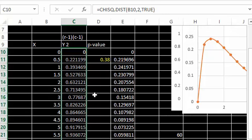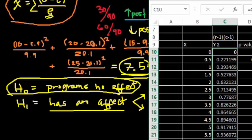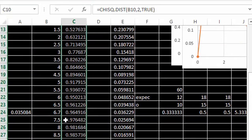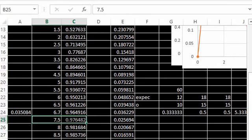Now what we wanted to find out is the probability of getting values of chi-square 7.5 or more extreme than 7.5. So that is right here. Let's color it yellow.